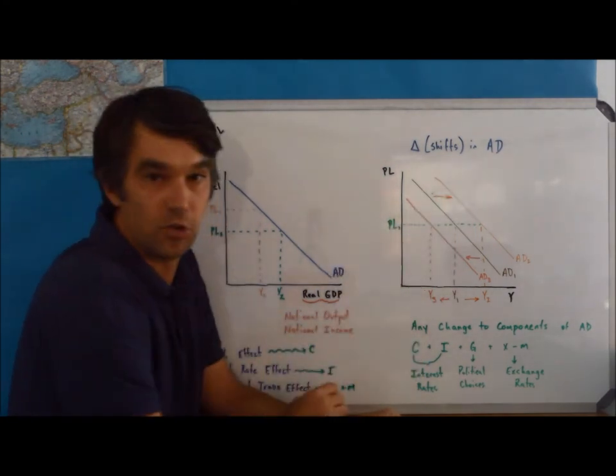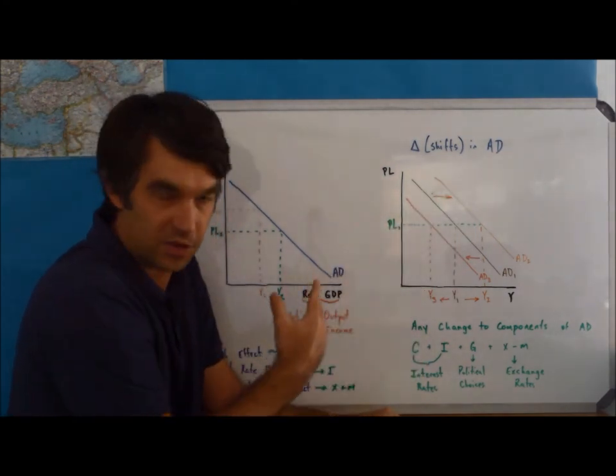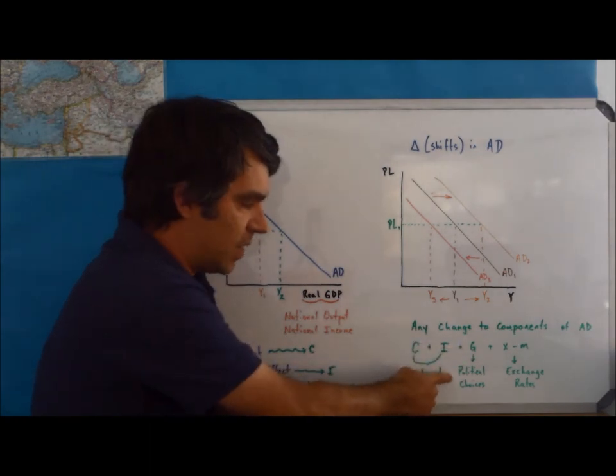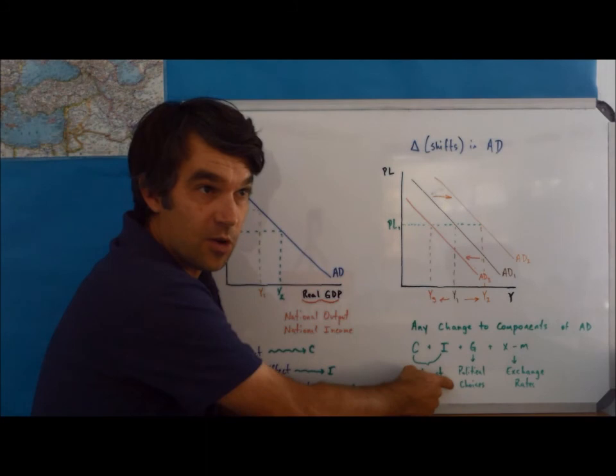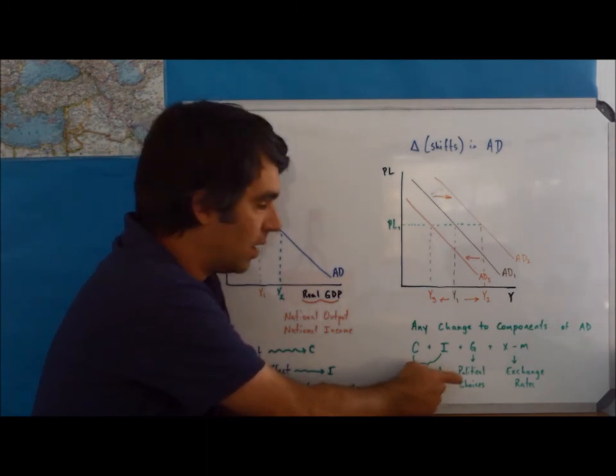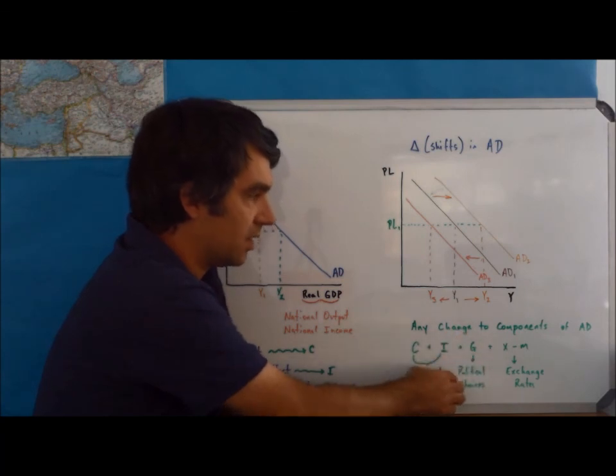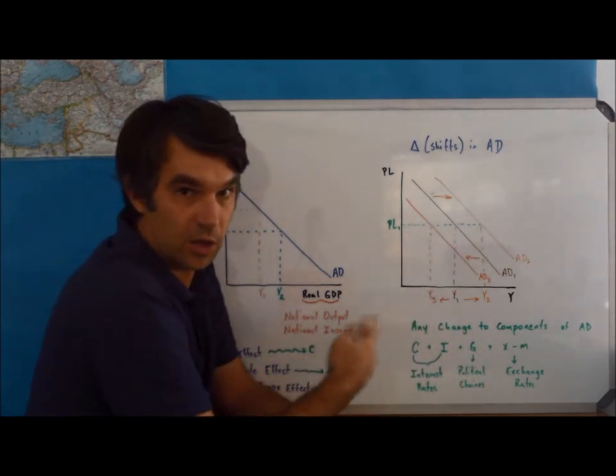G is basically about a political choice. So, if a new government comes in and they decide that they're going to buy more things or hire more people, anyway, some sort of political choice, we could see aggregate demand go left or right.